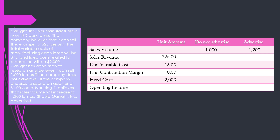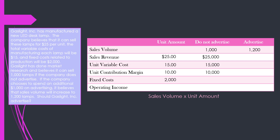We can figure out the amounts for Plan A (not advertise) or Plan B (advertise) by taking our sales volume for each decision alternative and multiplying it by our unit amounts. If we do not advertise, we sell 1,000 lamps at $25 a piece, generating $25,000 in sales revenue. We will spend $15 per lamp in variable production costs, so for 1,000 lamps that will cost $15,000. If we generate $25,000 of sales revenue and pay $15,000 in variable manufacturing costs, the contribution margin is going to be $10,000.